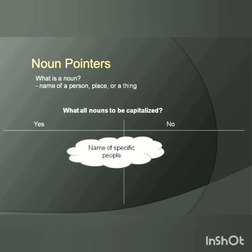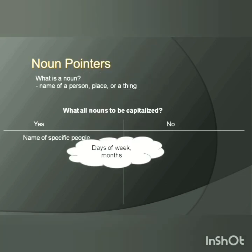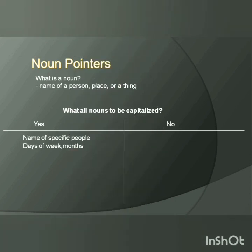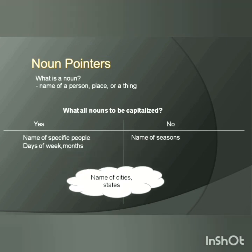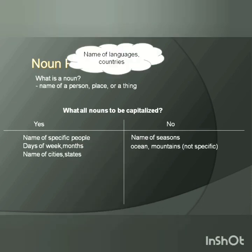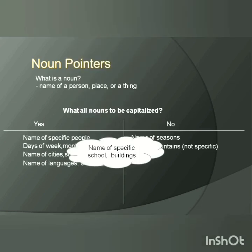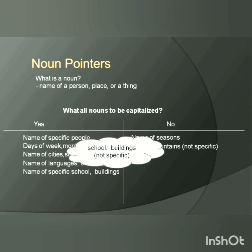We will start with what to capitalize and what not to capitalize. Name of specific people — we should capitalize. Days of week and months — we should capitalize. Name of seasons — we should not capitalize. Name of cities and states — we should capitalize. Oceans and mountains, if not specific — we should not capitalize. Name of languages and countries — we should capitalize. Name of specific schools and buildings — we should capitalize. School buildings, if not specific — we should not capitalize.